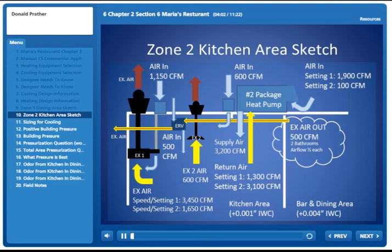Zone 2 sketch - there's a whole lot more going on here. We've got about a 10-ton unit on the rooftop with two different settings: 1,900 CFM and 100 CFM for the outside air being brought in. It's also got two return air settings. Supply air is constant at 3,200 CFM.